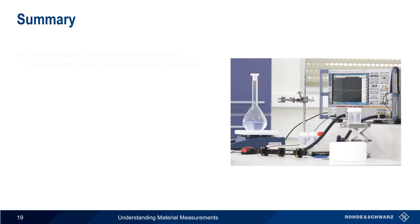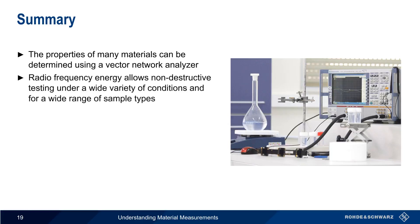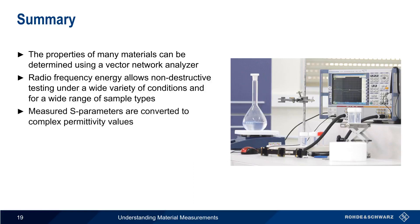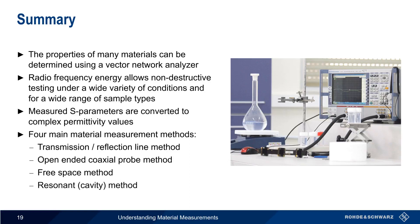In summary, the physical properties of many materials can be determined using a vector network analyzer, by making precise measurements of how radiofrequency energy is absorbed, passed, and reflected by the material under test. Using RF allows non-destructive testing under a wide range of conditions and for many different types of materials. A vector network analyzer generates results in the form of S-parameters, which can then be converted to complex permittivity values using various computational methods. We also looked briefly at each of the four main material measurement methods: the transmission reflection line method, the open-ended coaxial probe method, the free space method, and the resonant or resonant cavity method. This concludes our presentation, Understanding Material Measurements. Thanks for watching.